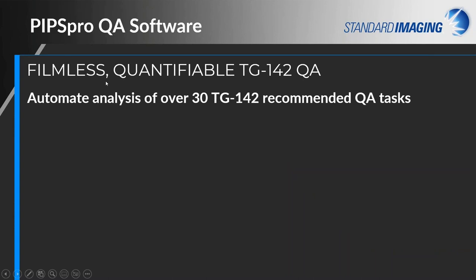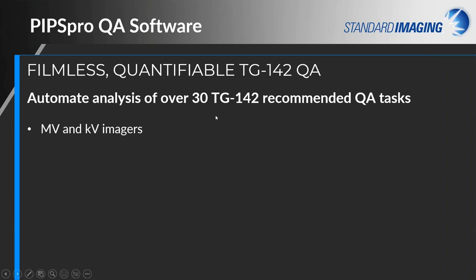PIPS Pro Software is a filmless and quantifiable TG-142 QA solution. It automates analysis of over 30 TG-142 recommended QA tasks, including imager QA for both the MV and KV imagers — both 2D panels — as well as cone beam CT. There are a whole host of tests for that, which we'll touch on in more detail as we move along.